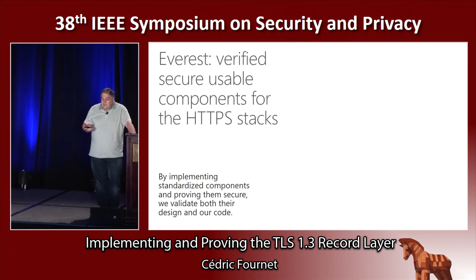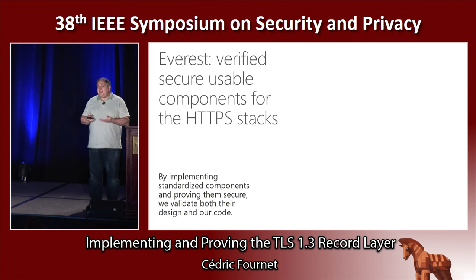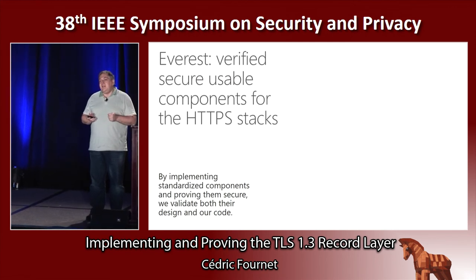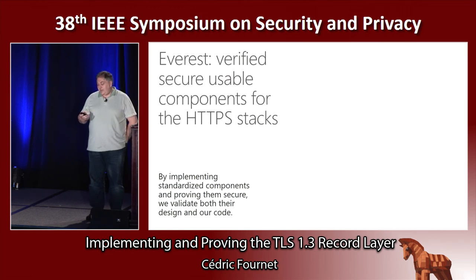What we do is essentially take a standardized component — bits of the TLS or HTTPS stack — implement them, build a model of them, and prove that the actual implementation is secure. The goal is twofold: we want to show that our code is secure, but also to validate the design by having something detailed enough that we can run it for interop and check that by implementing the design, we get all the security properties we expected. That's what I'm going to show today for the TLS 1.2 and 1.3 record layer.